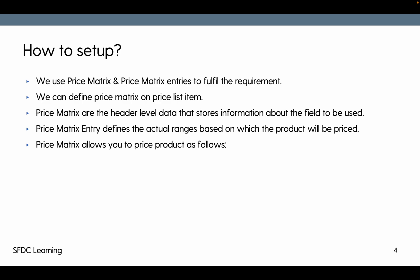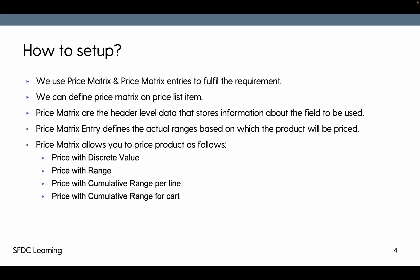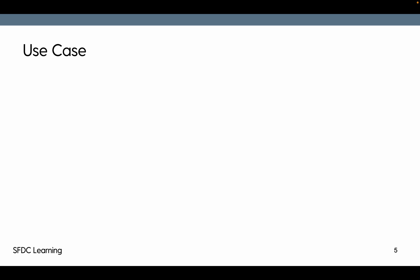Price metrics allows you to price a product in five ways: price with discrete value, price with ranges, price with cumulative range per line, price with cumulative range per cart, and price with weighted range. Out of those five, today we are going to cover two: price with discrete value and price with ranges.